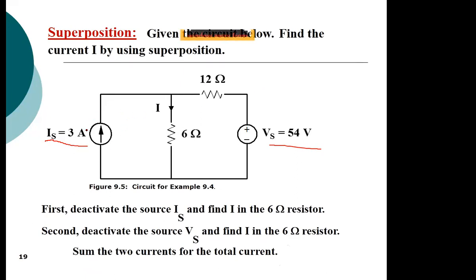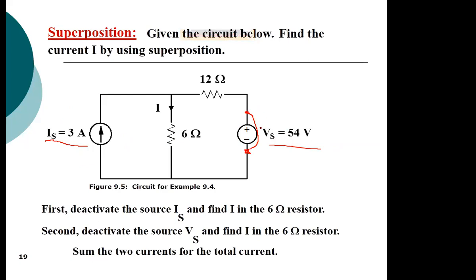To deactivate a current source, you disconnect it totally from the circuit so that it leaves an open circuit — you remove it and it leaves an open connection. To deactivate a voltage source, you remove it and replace it with a short circuit, giving a zero-ohm resistance path across where the voltage source was connected.